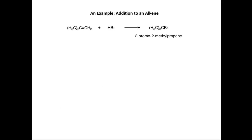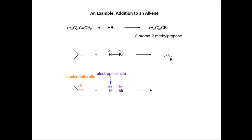In our second example, we look at addition of HBr to an alkene. Here is a terminal alkene; adding HBr across it gives 2-bromo-2-methylpropane. We draw the skeletal structures marking delta plus on the H and delta minus on the bromine. The alkene's electron-rich pi bond is the nucleophilic site, and the delta plus hydrogen in HBr is the electrophilic site.